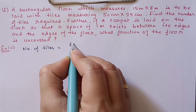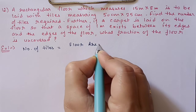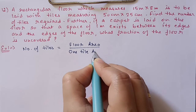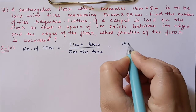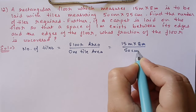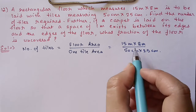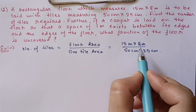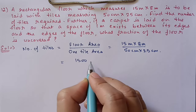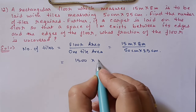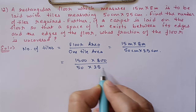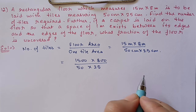Floor area is 15 meters by 8 meters and one tile is 50 cm by 25 cm. First we will make the units the same — we will convert meters to centimeters: 15 meters becomes 1500 cm and 8 meters becomes 800 cm. Below it is 50 cm by 25 cm, so now units will cancel out.